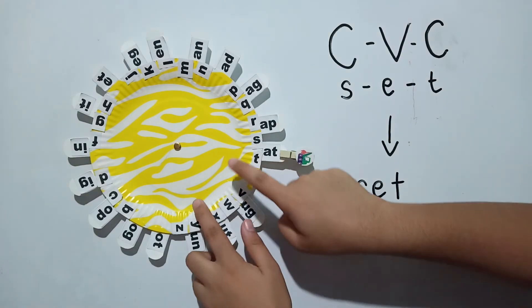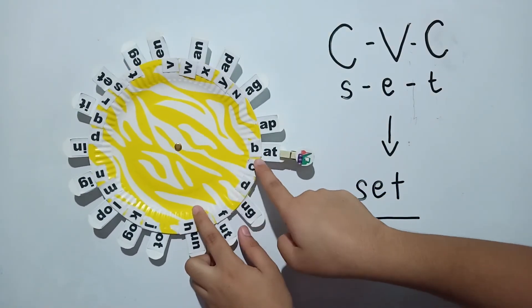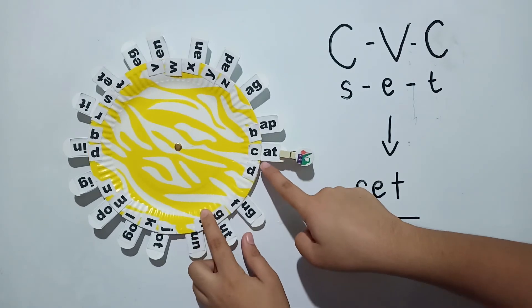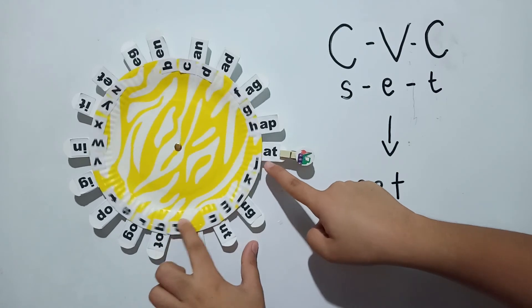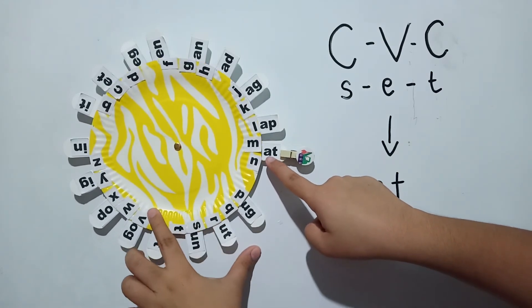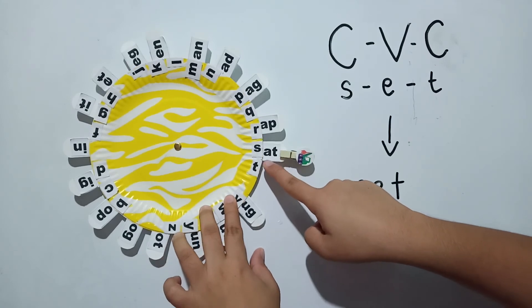And the words that we can create are bat, cat, fat, hat, mat, pat, rat, and sat.